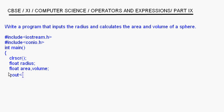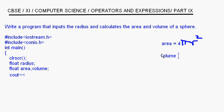Now you should know the formula. The area of a sphere is 4πr², and the volume of a sphere is 4/3 πr³. We have to apply these formulas.